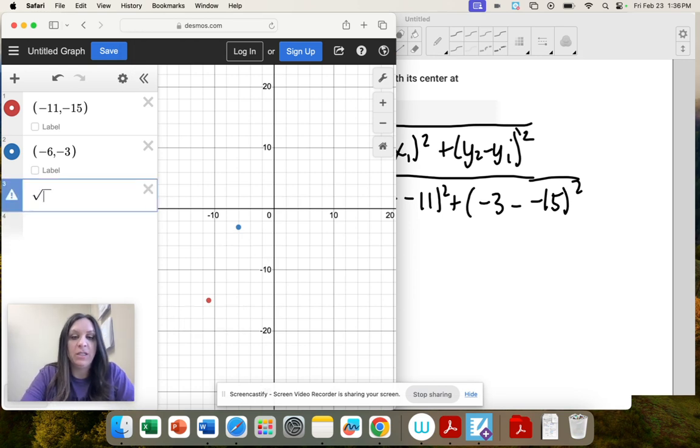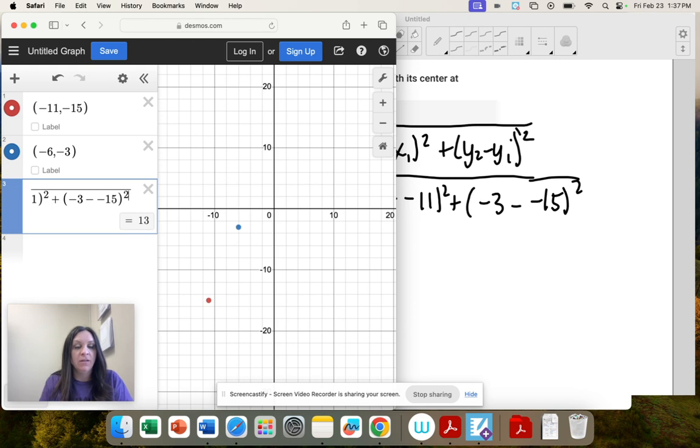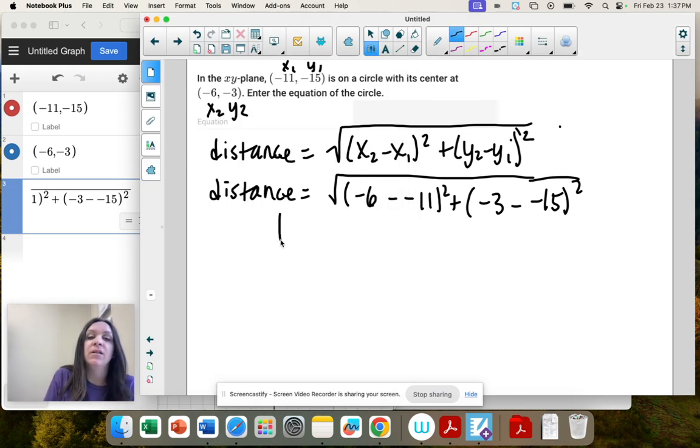Square root negative 6 minus negative 11 squared plus negative 3 minus negative 15 squared. And our distance is 13. And remember, that's the radius.